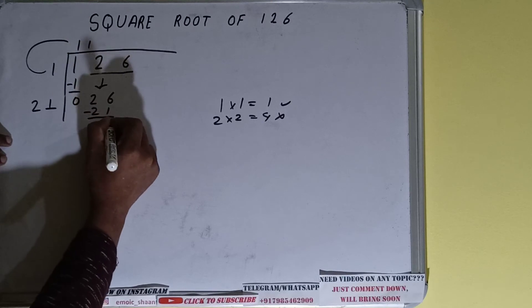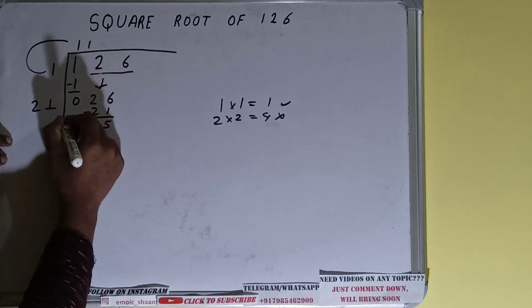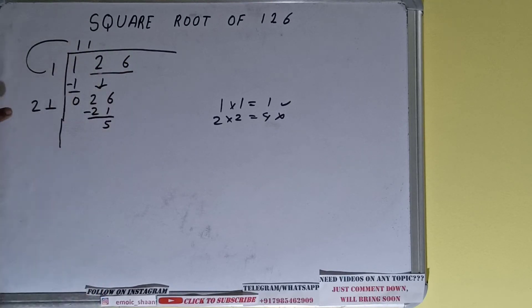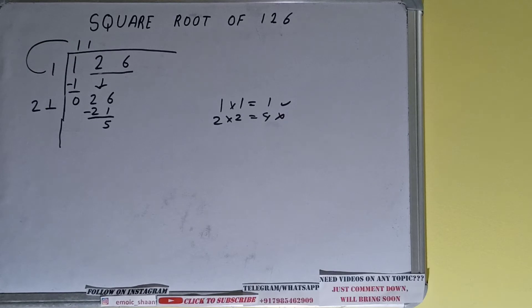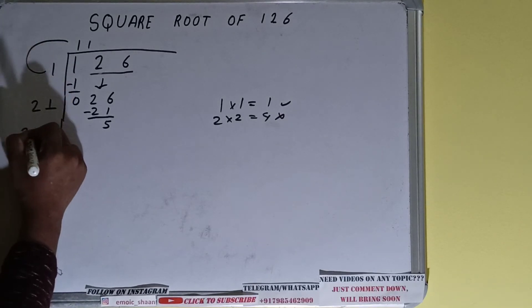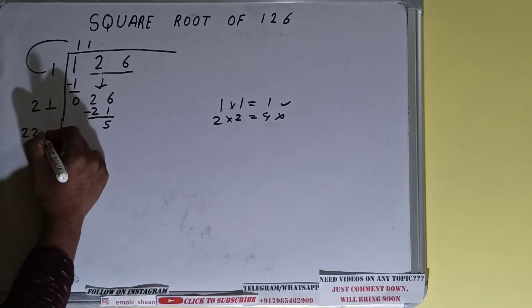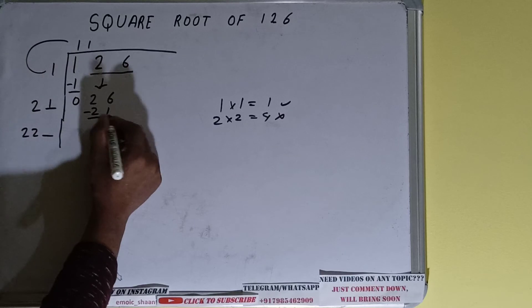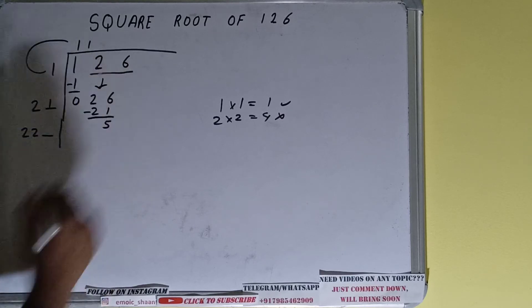21 — subtract, it will be left with five. Now we multiply 21 with one, so 21 plus one will be 22. Place it here and keep one digit extra.